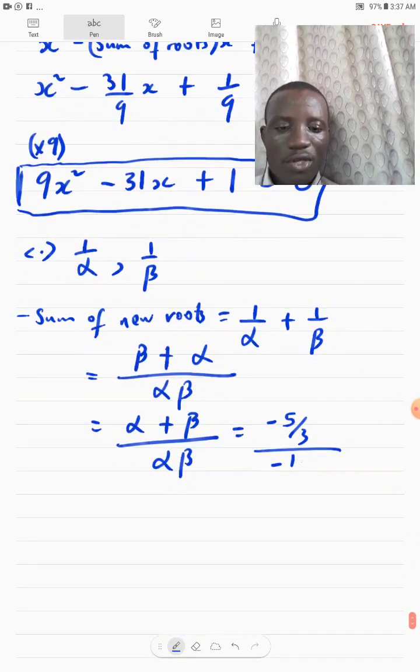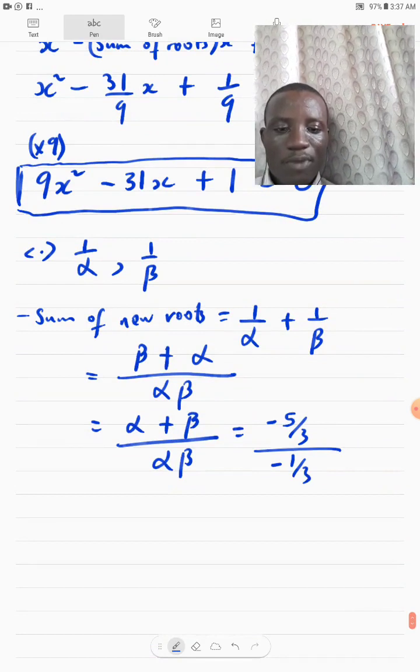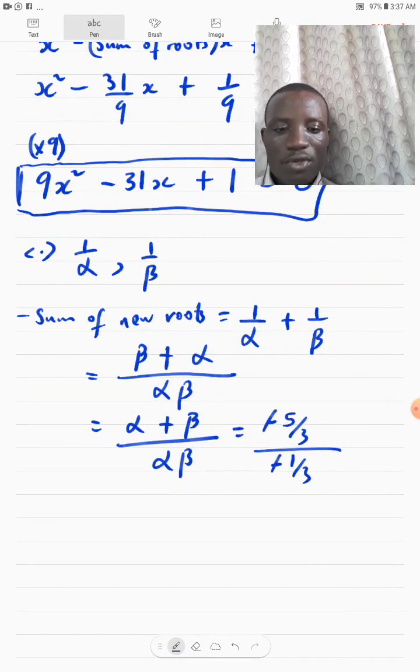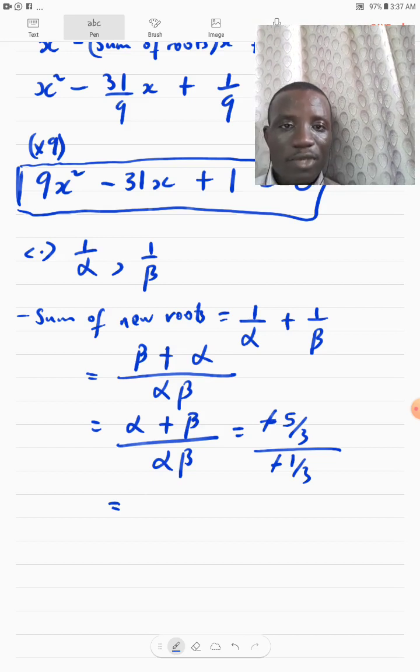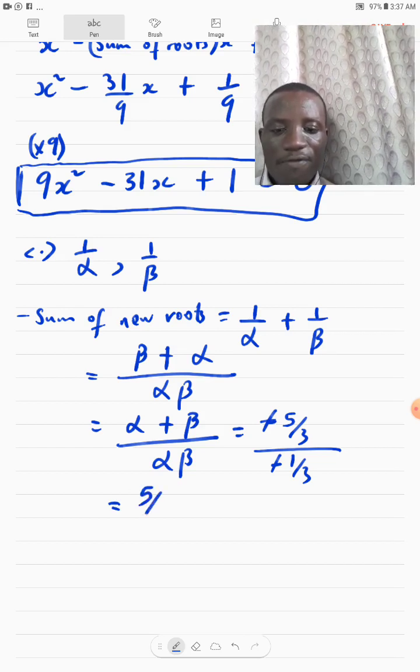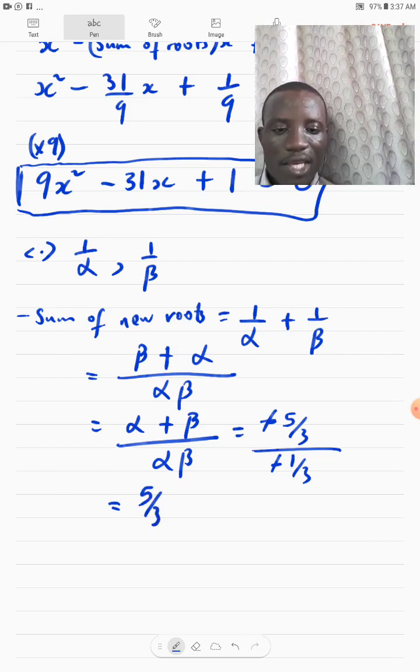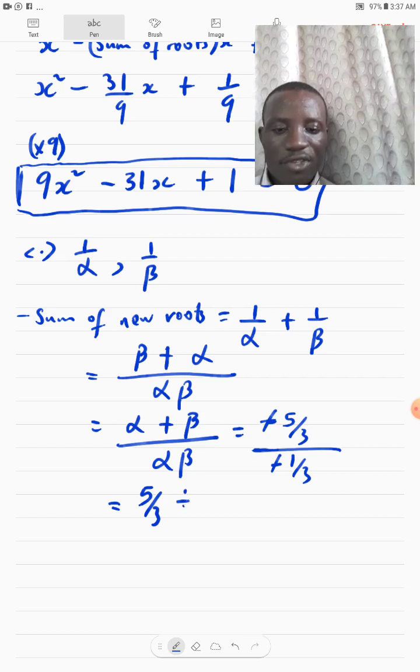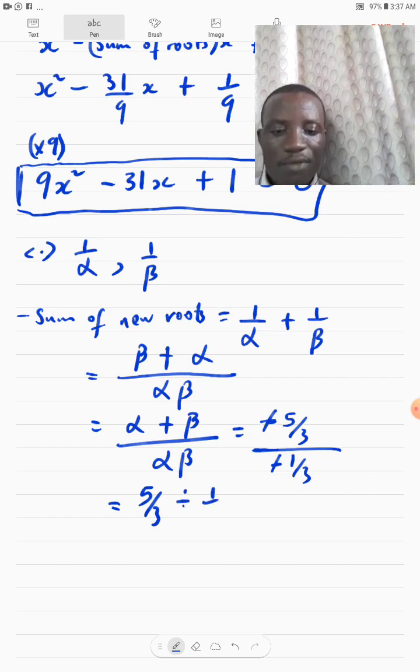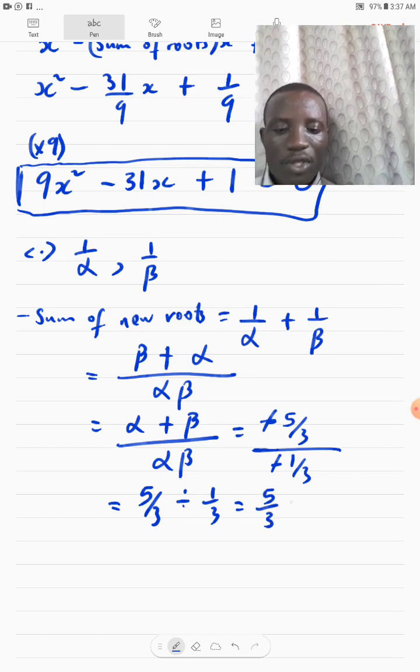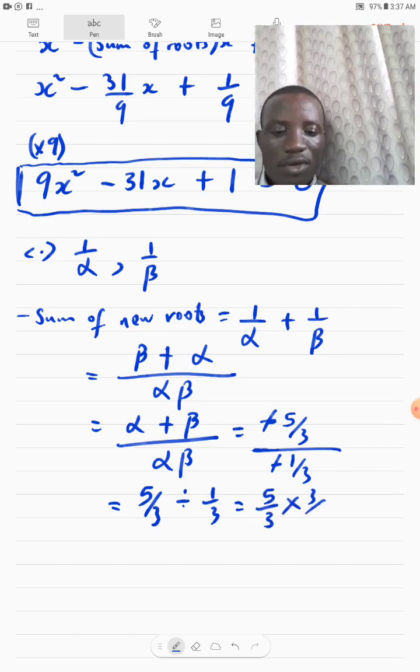This minus will first cancel out. So, we already eliminated the negative sign. Now, we have 5 over 3. This line here means division. And we have divided by 1 over 3. And that will give me 5 over 3 times 3 over 1. 3 cancel 3. That will be what? 5.